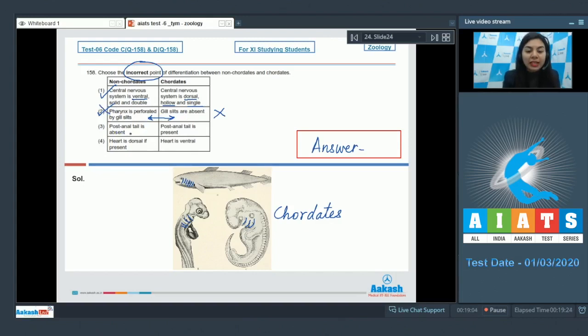Option 3: Post anal tail is absent in non-chordates. That is true, whereas it is present in chordates. This is right. Heart is dorsal if present. This is also correct, and heart is ventral in chordates. The incorrect point is about the pharyngeal gill slits. That is option number 2.